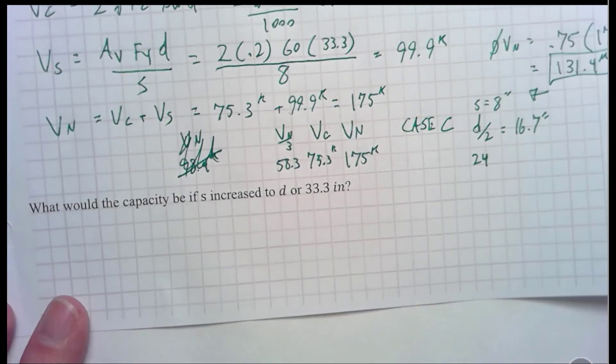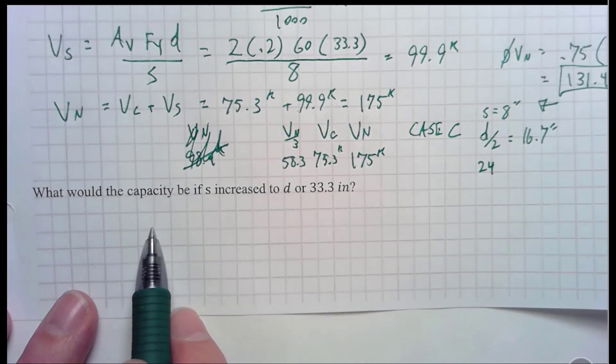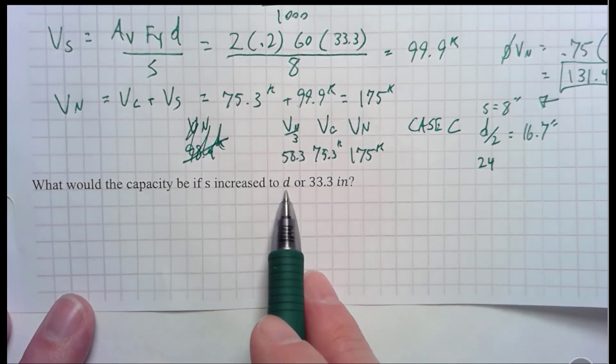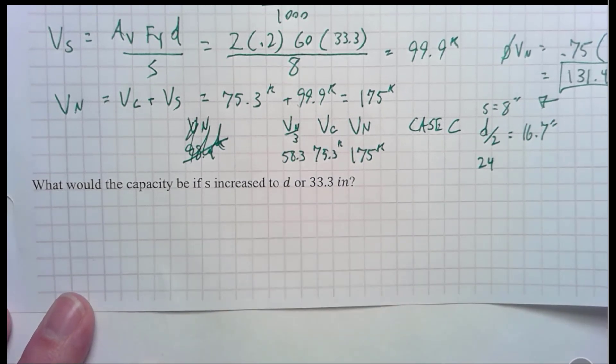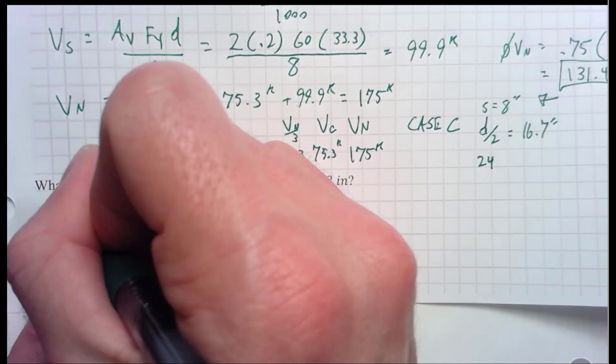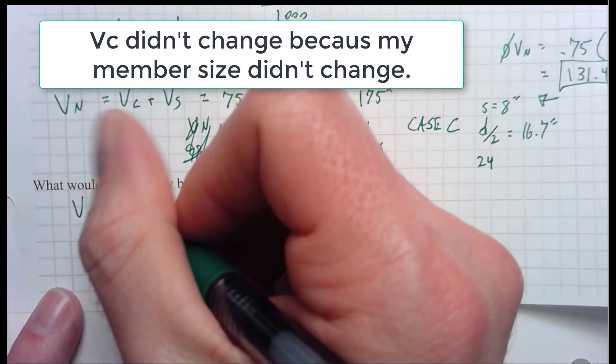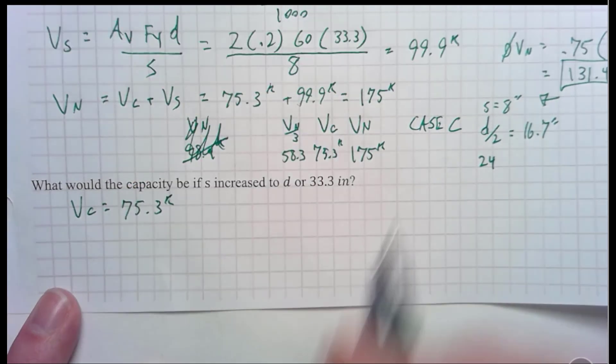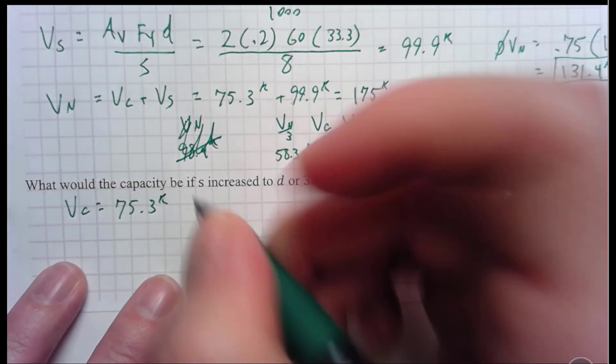But now what would happen if I increased my S to d or 33.3? What if I made that S larger? Well, capacity is going to change, right? Well, let's go ahead and figure out what that would be. Now, my V sub C isn't going to change. It's going to be the same thing it was before. It's going to be 75.3 kips. Now, my V sub S is going to be a little bit different.